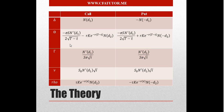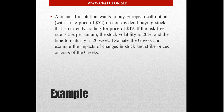Rho is the sensitivity of the option price with relation to the risk-free rate. Again, none of these formulas are required to be calculated for the exam, but they are important to understand. So let's see how the Excel sheet works. A financial institution wants to buy a European call option with a strike price of 52 on a non-dividend-paying stock currently trading at 49, with a risk-free rate of 5%, stock volatility of 20%, and time to maturity of 20 weeks.